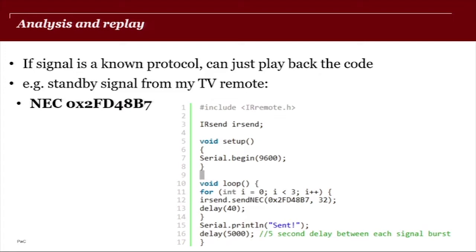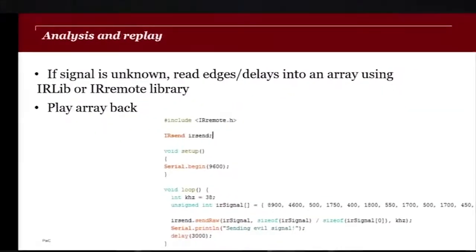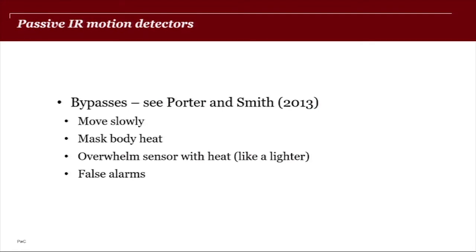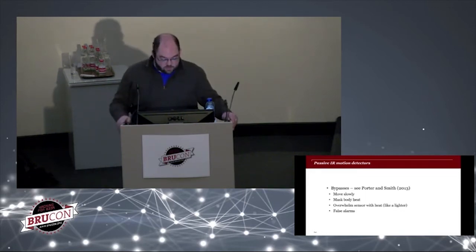And then playing it back, if it's a known protocol, you could just play it back. So in this case, it's NEC again. So I could just use the IR remote library to just play that back. If it's unknown, you have to do something similar to what you would do with RF. So you read the edges and the delays into an array and then play that whole array back as well. So what's the point of talking about infrared signals? Why would we want to clone an infrared signal? Well, one example would be if you're trying to bypass some kind of security system that uses infrared remote controls. In this case, I'm going to be talking about an infrared motion detector. So there have been various bypasses proposed for infrared motion detectors at Porter and Smith in 2013 at Black Hat suggested various things. There was an episode of a popular television show where they bust myths that covered various ways to bypass infrared motion detectors.